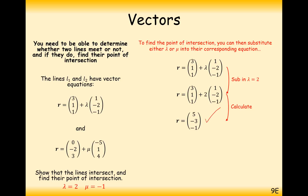So that is our point of intersection. To summarise: set one equation of a line equal to another, set x components equal to each other as a simultaneous equation, set y components equal to each other as a simultaneous equation, then check the z component — if both sides are the same, the lines intersect.